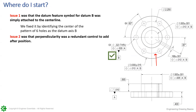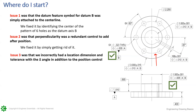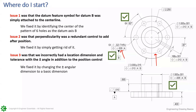Issue two: we simply removed the redundant five thousandths perpendicularity — position was already controlling it. If we want a tighter orientation, say one thousandth, we can add a perpendicularity refinement below the position feature control frame. That's called refining: keep position loose and refine the orientation with a tighter perpendicularity. Issue three: we changed the plus or minus angular dimension to a basic dimension, ensuring true position is completely defined by basic dimensions and the deviation is controlled solely by the position tolerance.